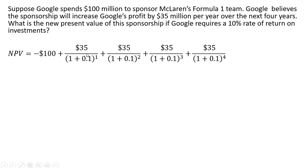This first payment is going to occur one year from now, so it's discounted back one year, where 0.1 is the 10% required rate of return, or the discount rate. Then this $35 million is going to be discounted back two years, so that's why this exponent is two. And then this $35 million of increased revenue is going to be discounted back three years. And then this $35 million that occurs at the end of the fourth year is discounted back four years.